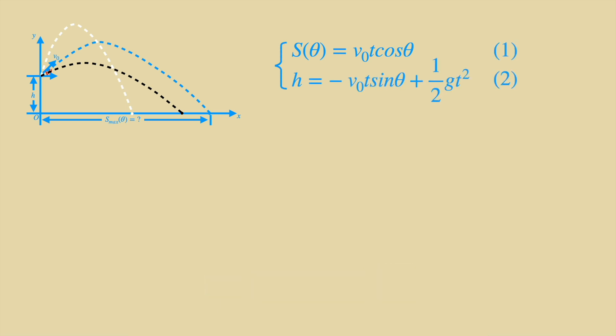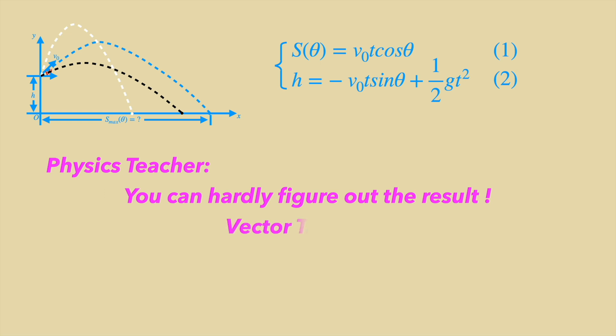Look at these two equations. We usually think it's possible to solve for t from the second equation and substitute t in the first equation. So we will have the expression of s of θ. But our physics teachers will tell us the method you proposed is not feasible, because you can hardly figure out the result. And the teacher will teach you the vector triangle to solve this problem in a physical way.